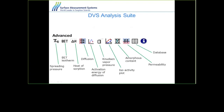The more advanced macros allow you to calculate spreading pressure, surface area, heat of sorption, diffusion coefficient, and activation energy of diffusion — which shows the energy barrier for vapor to get into the material and therefore the stability and shelf life of the material.